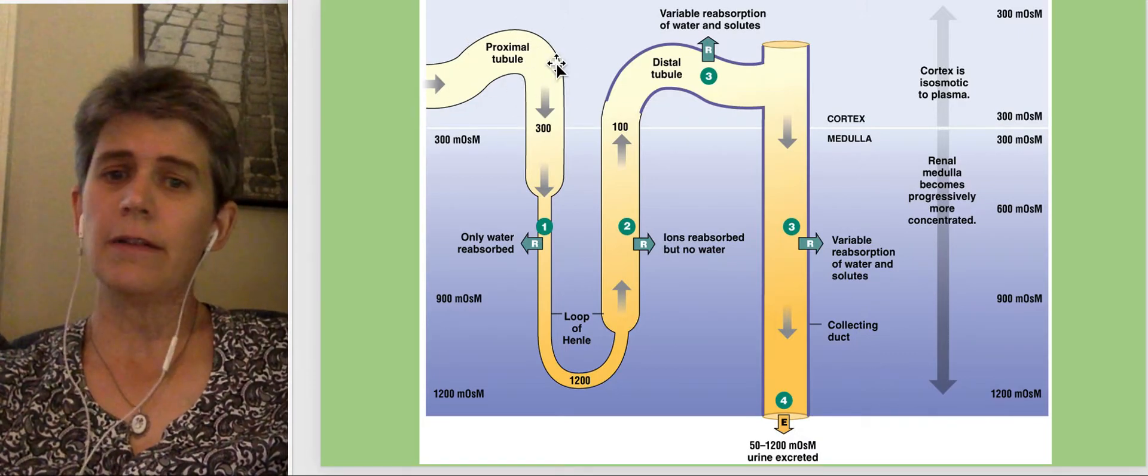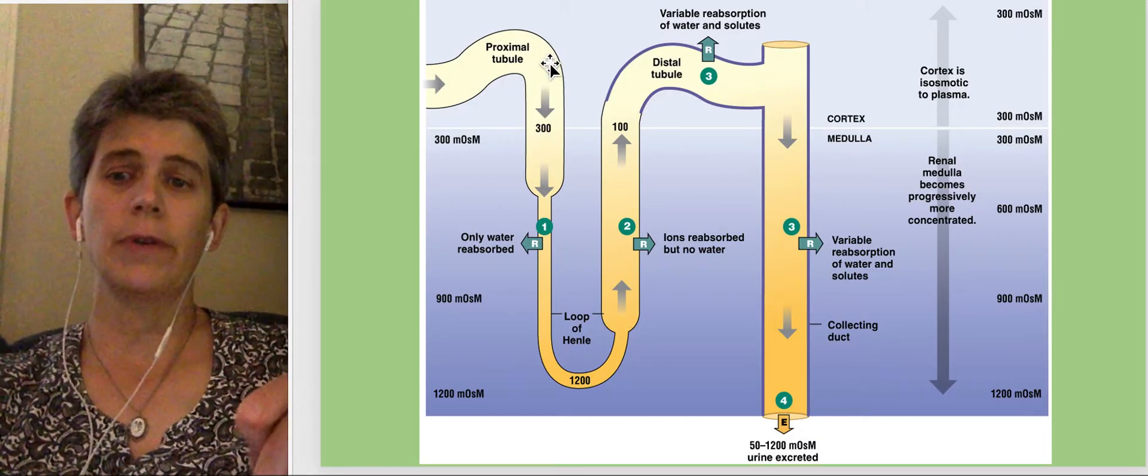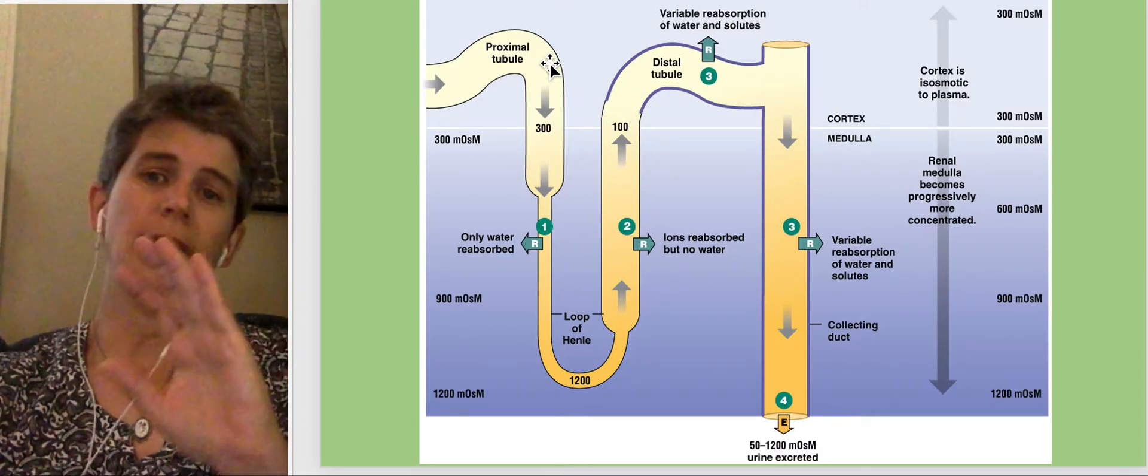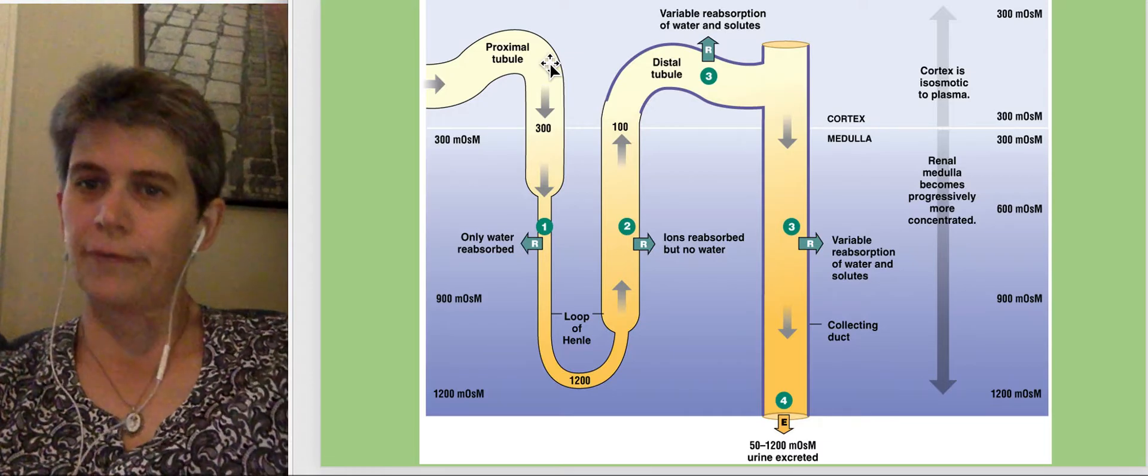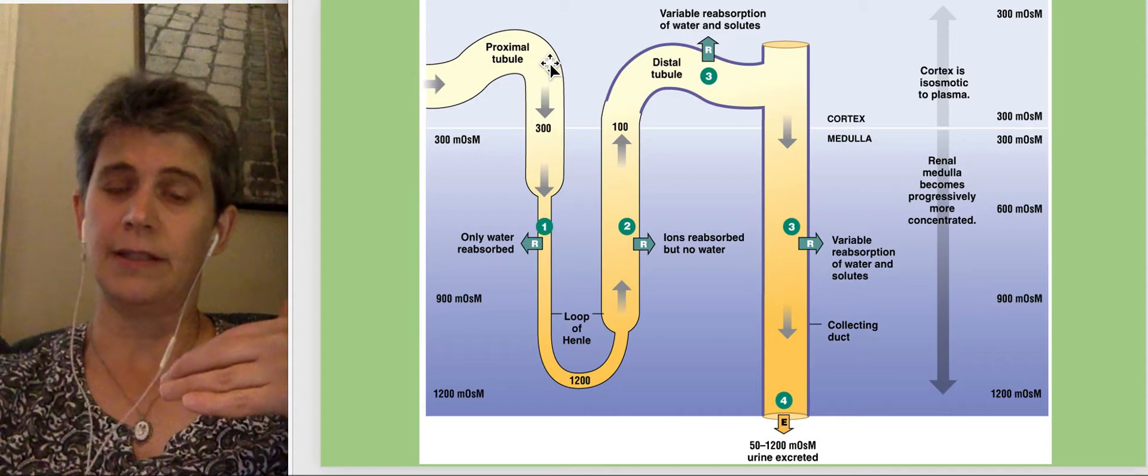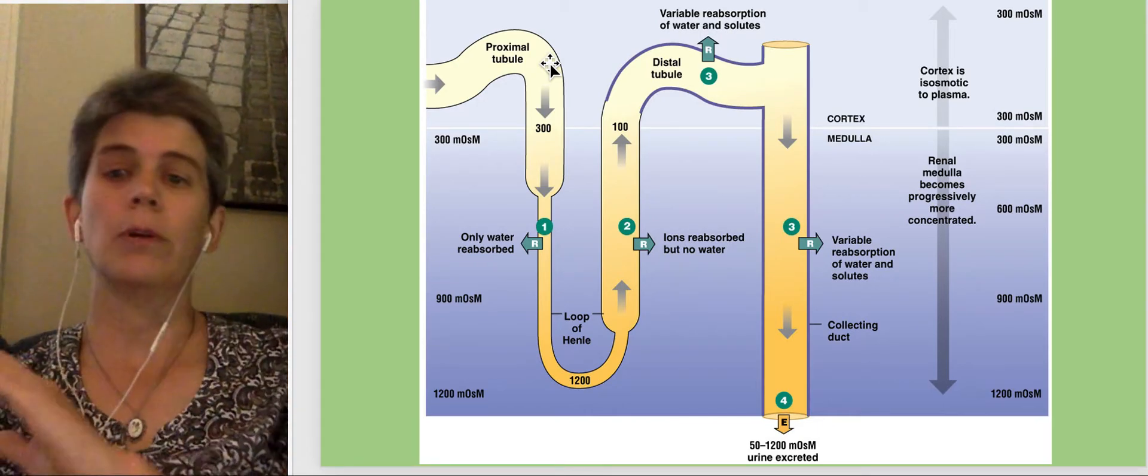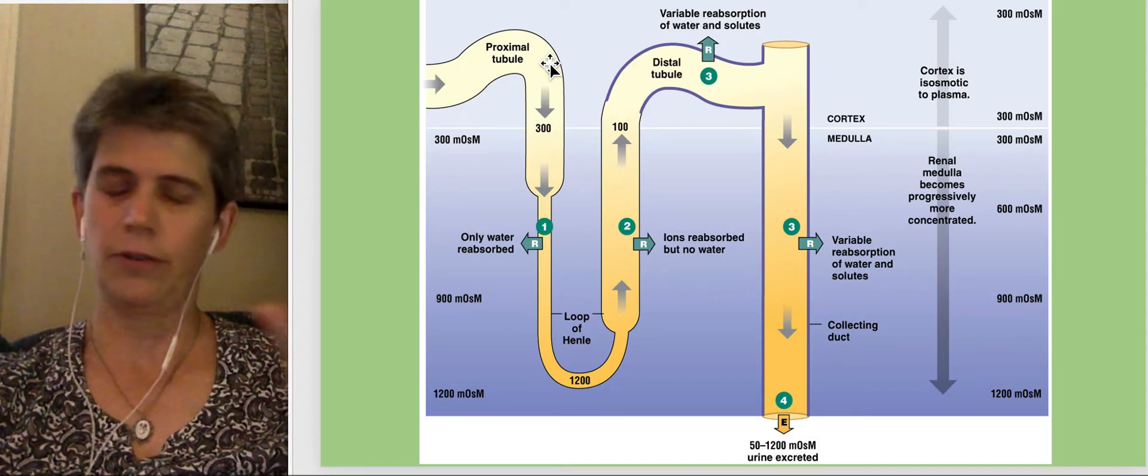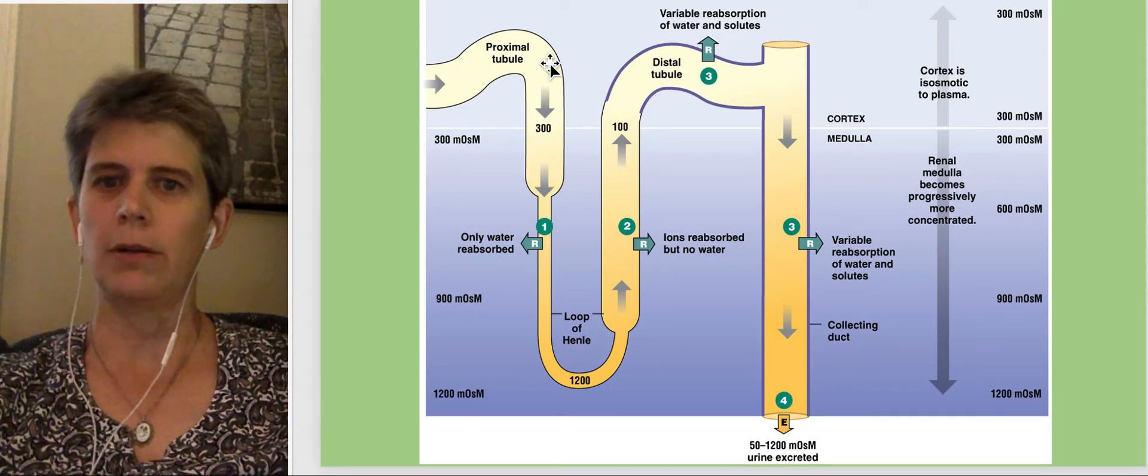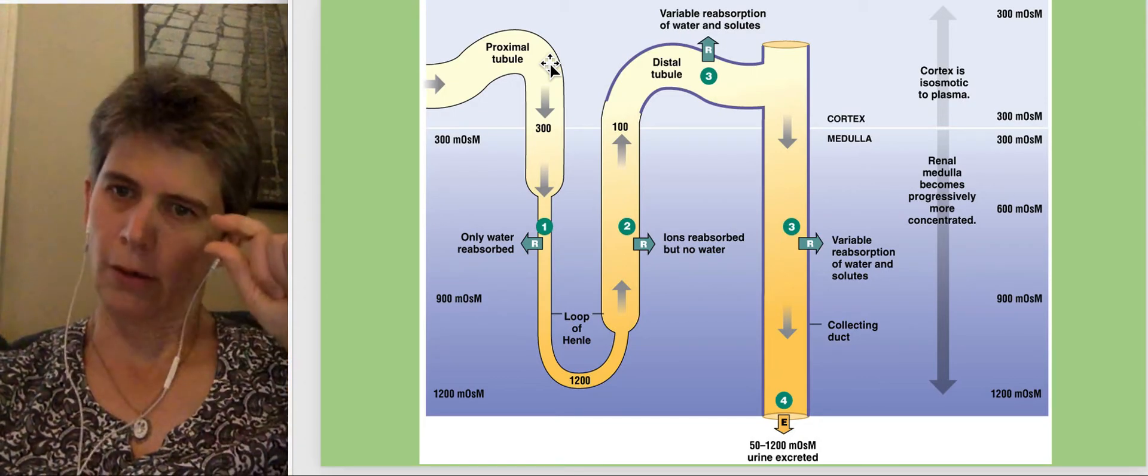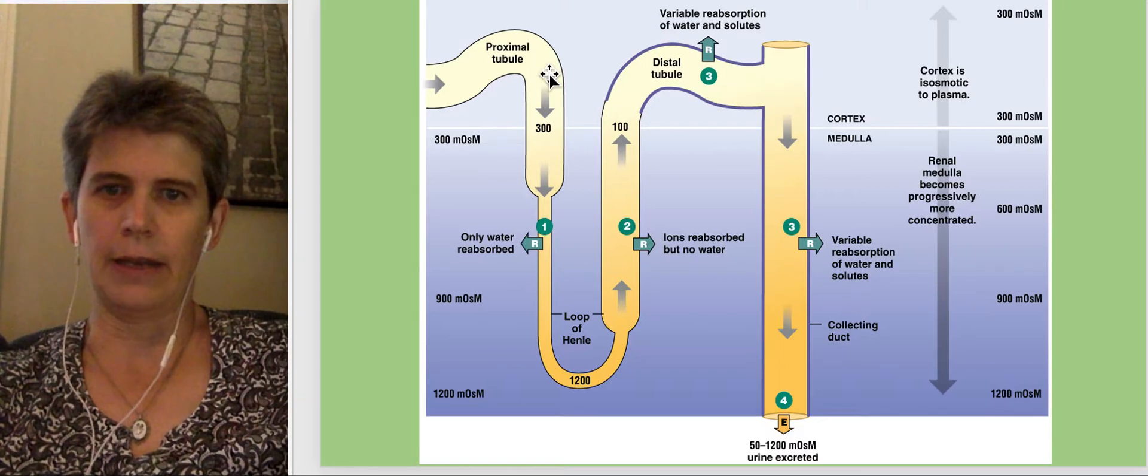So that was in the proximal tubule. By the time we get to the end of the proximal tubule, we have reabsorbed 60% of the water and solutes that entered. So we've decreased the volume of what has entered quite a lot at this stage, and we've reabsorbed all of the glucose and all of the amino acids that entered. So there shouldn't be any energy-containing molecules left, and there should be only 40% of the water and salt that entered.